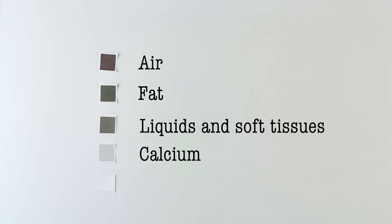Air is the darkest. The next one is fat, followed by liquids and soft tissues. Then calcium, which is an important component of bones. And finally metal, which is the whitest on the film.